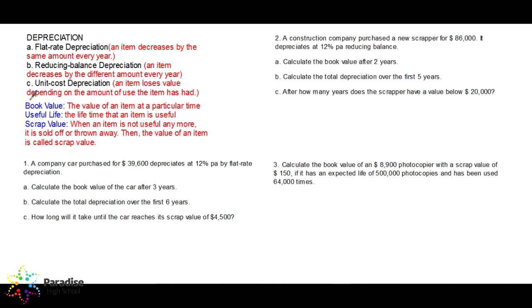Before we start solving the examples, we have to know the meaning of some phrases you will always come across in a depreciation question. Book value is the value of an item at a particular time — for example, a car which costs $10,000 kina; if asked what the value is after two years, that is the book value after two years. Useful life means the item is used for some time, and after that it is not useful anymore.